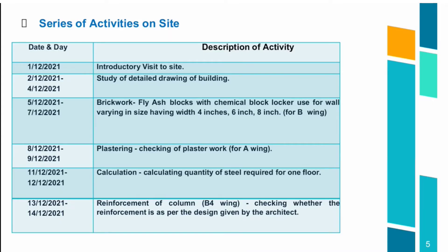Series of activities on site. On the very first day, we had an introductory visit to the site. From 2nd to 4th day, there was a study of drawings of the building. From 5th to 7th day, it was about brickwork. From 8th to 9th day, it was about plastering and checking of plasterwork for A-wing. From 11th to 12th day, it was about calculation of steel required for one floor.